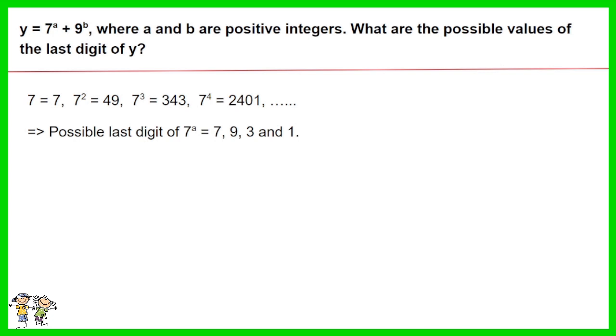9 to the power of 1 is 9, 9 to the power of 2 is 81, 9 to the power of 3 is 729. The possible last digit of 9 to the power of b is 9 and 1.